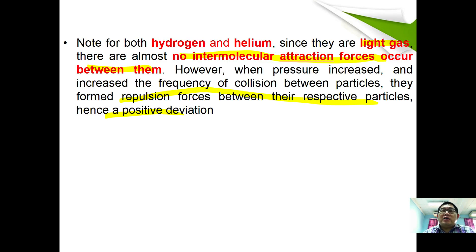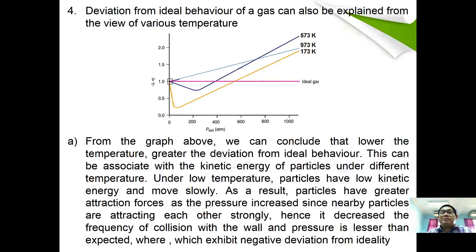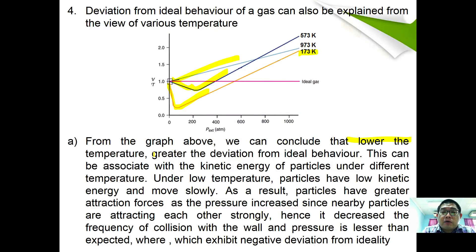Deviations from ideal behavior can also be explained in terms of temperature. At low temperature, gases deviate more from ideal behavior; as temperature increases, deviation lessens. The lower the temperature, the greater the deviation. Under low temperature, particles have low kinetic energy and move slowly, so greater attraction forces are exerted, decreasing the frequency of collisions with the container wall, and pressure is less than expected — exhibiting negative deviation.